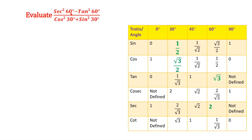Evaluate secant squared 60 degrees minus tan squared 60 degrees, divided by cos squared 30 degrees plus sin squared 30 degrees. From the trigonometric table, secant 60 degrees is 2, tan squared 60 degrees is root 3, and cos squared 30 degrees is root 3 by 2.